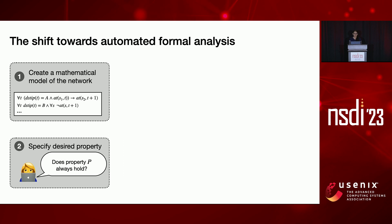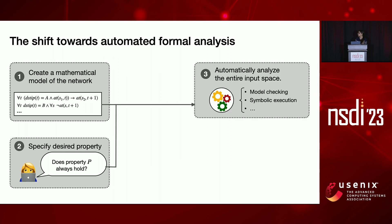You specify the properties that you're interested in against the same model, using a similar notation. Then you feed both of them into a formal analysis tool — this could be a model checker, a symbolic executor, or some combination of that.